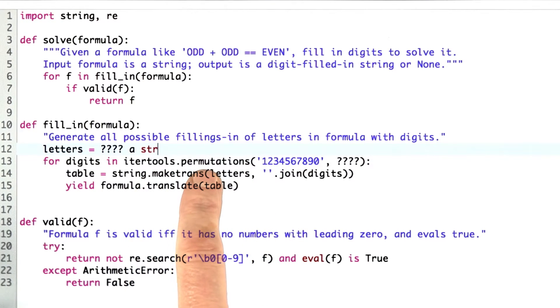The function iterTools.permutations returns a tuple of results, and so we want to join together that tuple into one big string, make up the translation table, and then call formula with the translate method with that table to translate all the letters into the appropriate digits and yield that result.